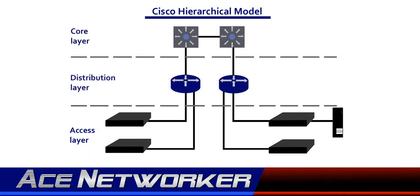There are different responsibilities you'll find at each layer of this model, and again, it's logical and not necessarily physical components. Much like the OSI model that has seven logical layers, it's very similar in the Cisco Hierarchical Model — you may have many devices in one layer and sometimes only one device in a layer. Just remember, the definition of the layers is logical and not physical.